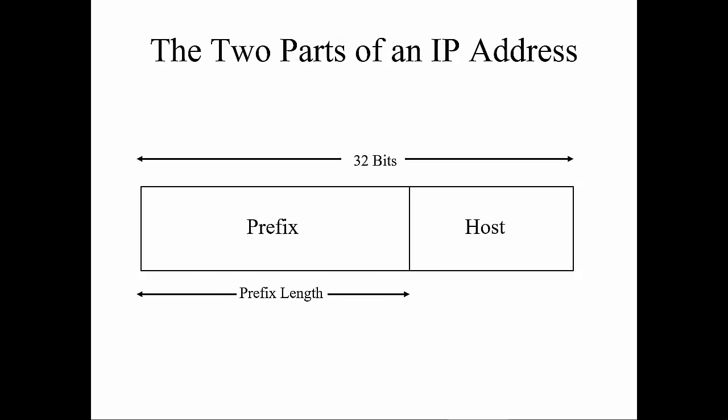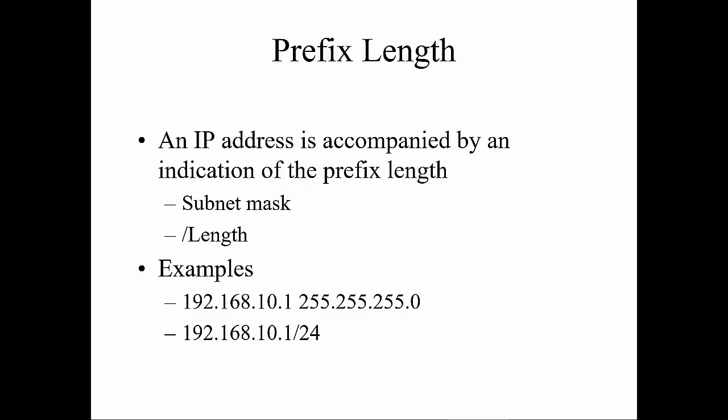An IP address is accompanied by an indicator of the prefix length, normally known as a subnet mask. It's sometimes written in dotted decimal form — like 255.255.255.0 — or in slash notation, like /24. 255 is 8 bits, so we have 8 bits in the first octet, plus 8 in the second, plus 8 in the third, and 0 in the fourth — that is 24 bits. So slash 24 is just telling you how many ones, or how many bits, are in that dotted decimal. Then you do the appropriate conversion to figure out either the dotted decimal form or the slash notation.